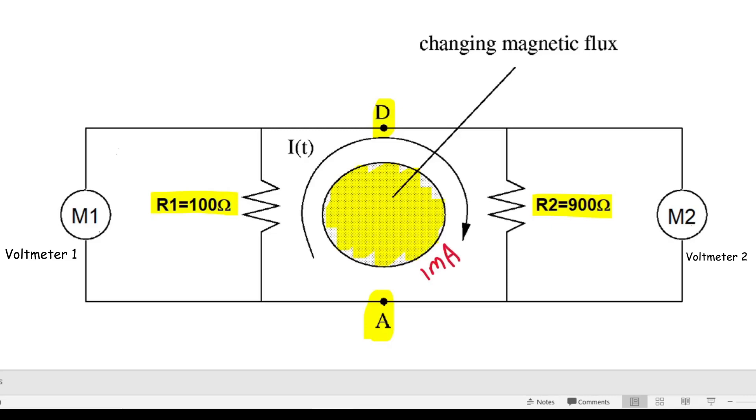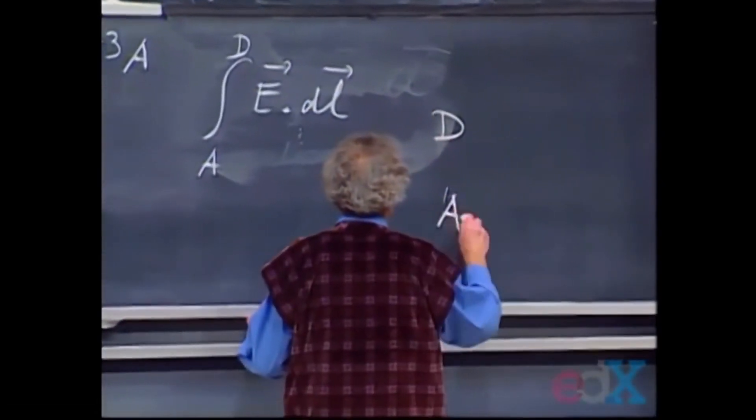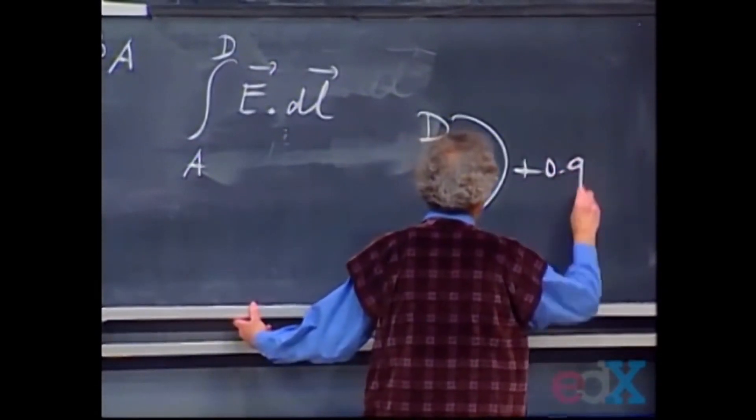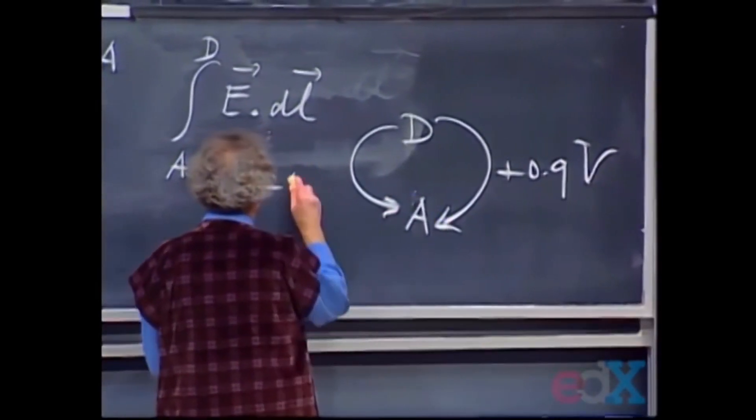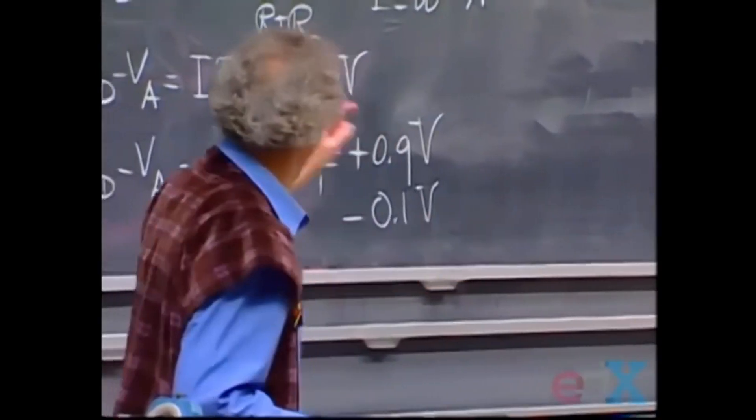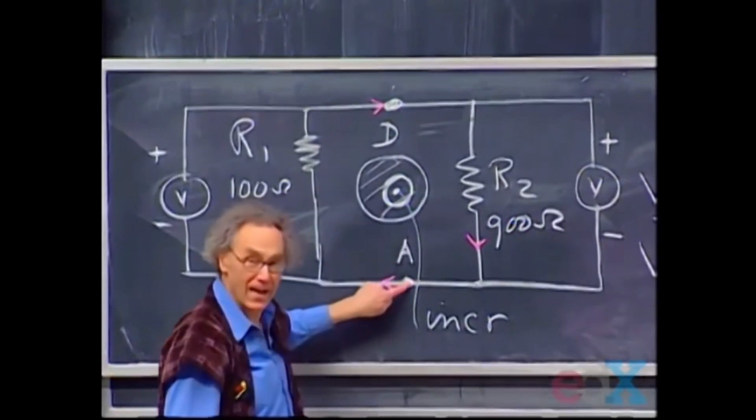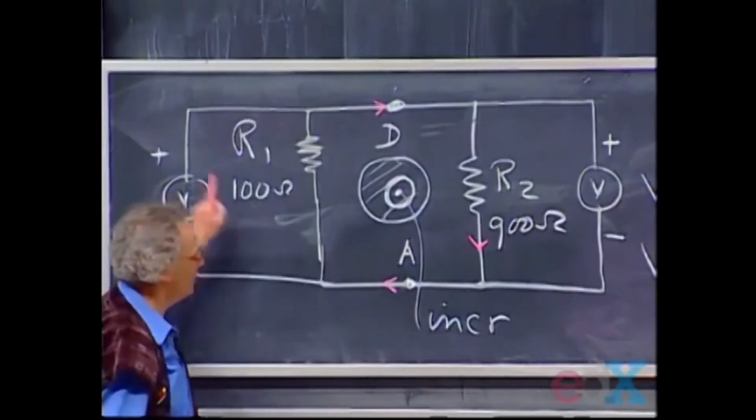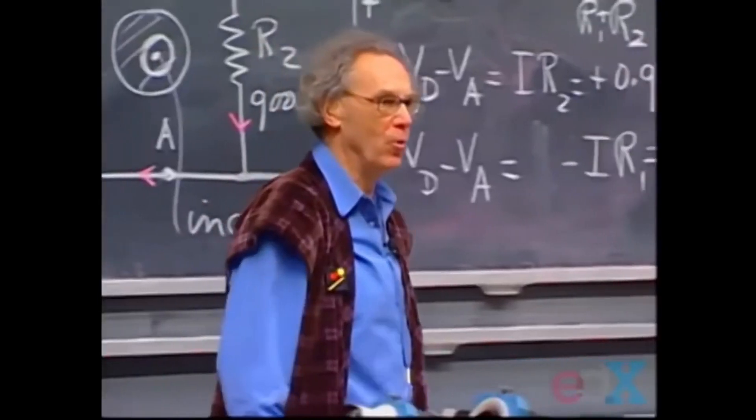By Ohm's law, 1 milliamp passing through R2 produces a voltage of 0.9 volts across R2, and the same 1 milliamp passing through R1 produces a voltage of minus 0.1 volts across R1. And as Dr. Lewin explained, voltage from point D with respect to point A depends on the path of measurement, and the result may have different values in non-conservative field. This voltmeter, which is connected between D and A, reads plus 0.9. This voltmeter, which is connected to D and A, reads minus 0.1.